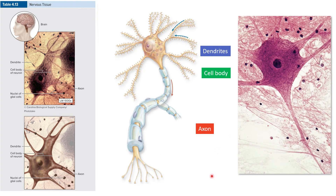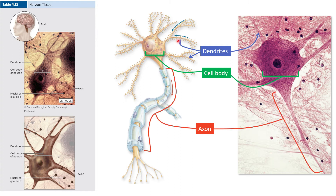A neuron contains a cell body — that's the neuron's control center. It has a plasma membrane around it just like all animal cells, and it houses the nucleus and most other organelles such as the mitochondria. The dendrites are shorter processes that extend from the cell body and conduct nervous impulses towards the cell body. The number of dendrites in a neuron varies; some types of neurons only have a single dendrite, others have many. The axon is the longer process extending from the cell body and it conducts impulses from the cell body to other neurons, muscle cells, or glands.